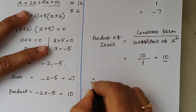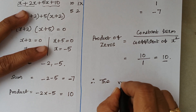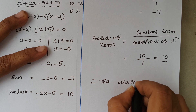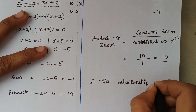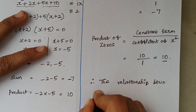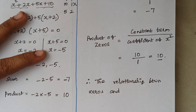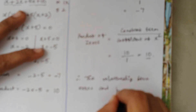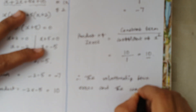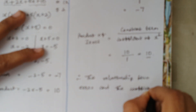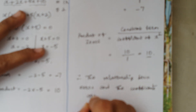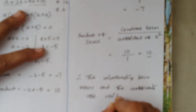Therefore, the relationship between the zeros and the coefficients is verified. That's all — the problem is complete. Thank you.